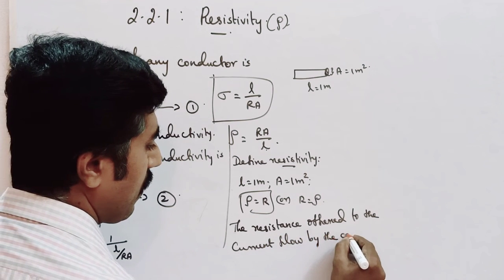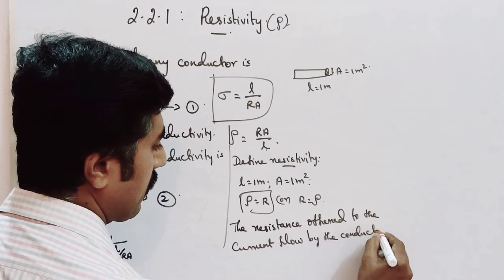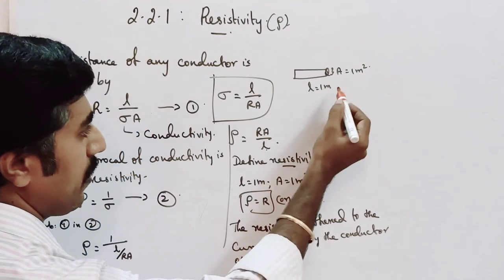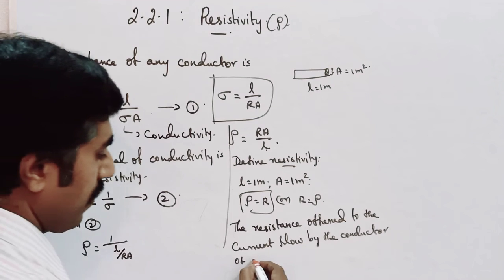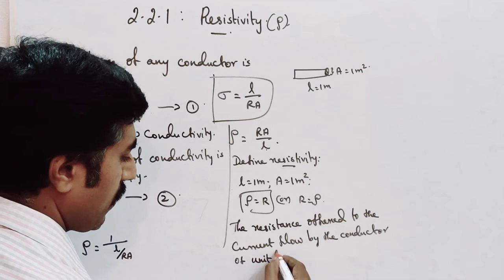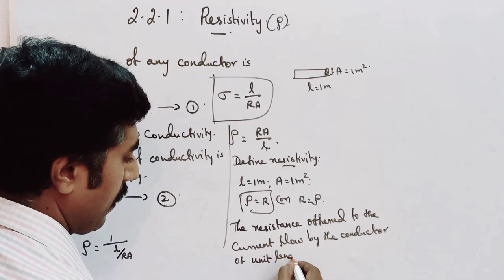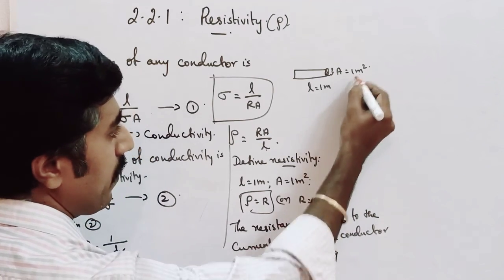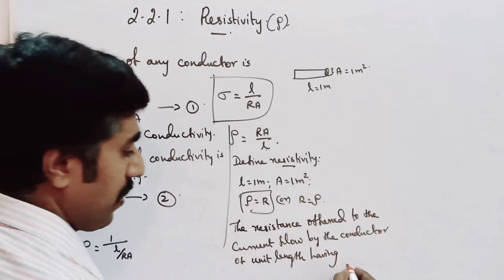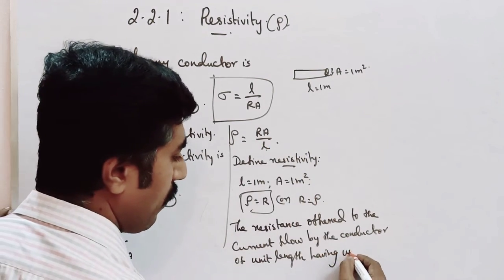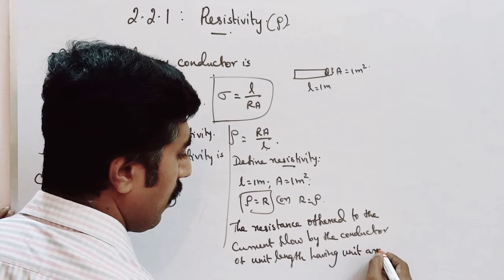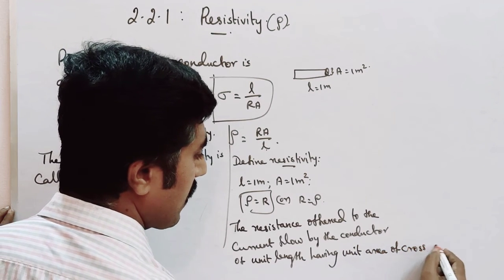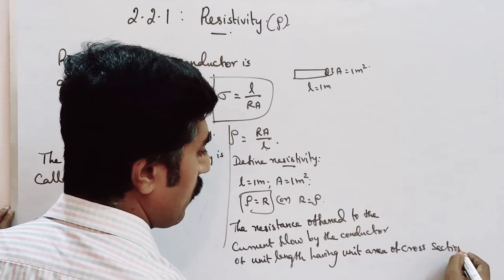The resistance offered by the conductor of unit length — that is, one meter length — having unit area of cross section, that is one meter square. This is the definition of resistivity.